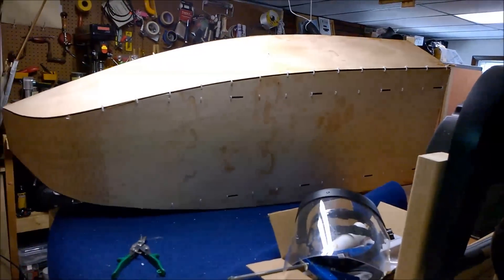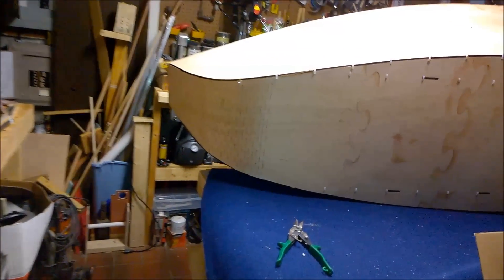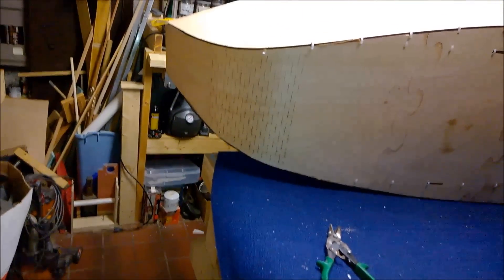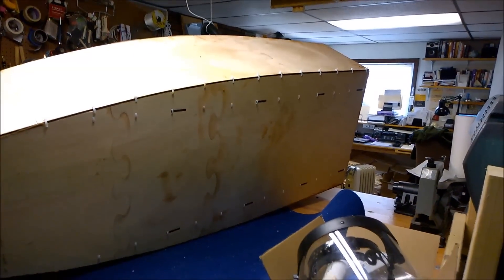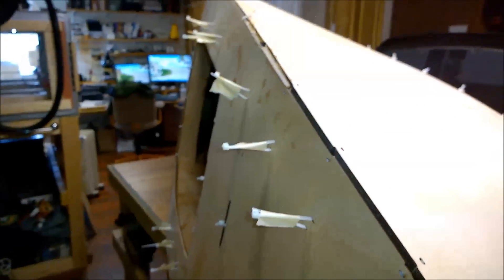One cool thing about stitch and glue boat building, and I've built some other boats in similar ways, is anything that seems like it's going off track can usually be fixed. And right now everything's going pretty much per plan. I've made a few decisions differently than the manual explained, but everything is coming together pretty well.